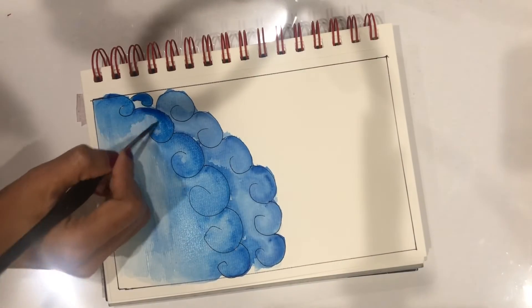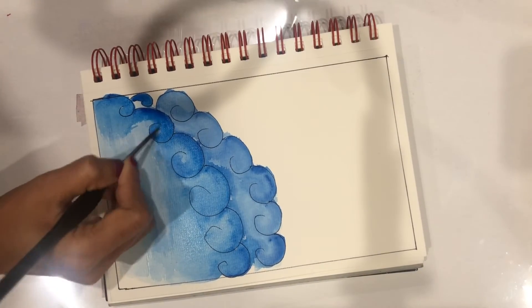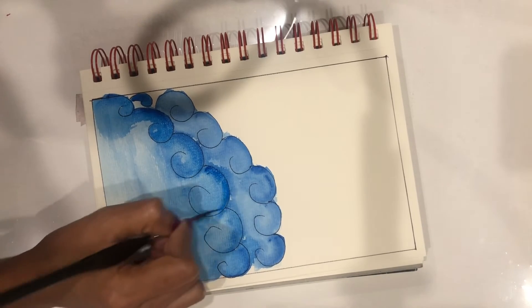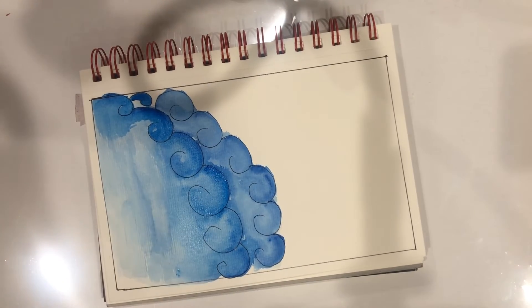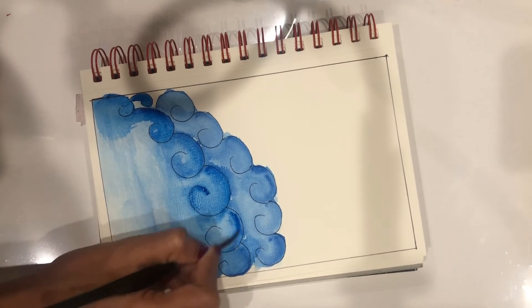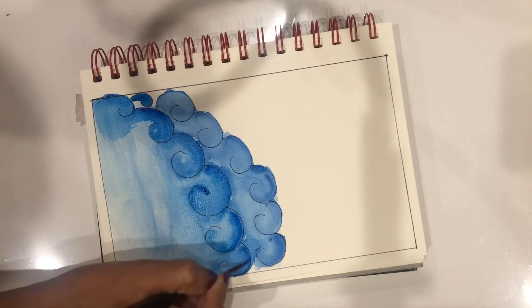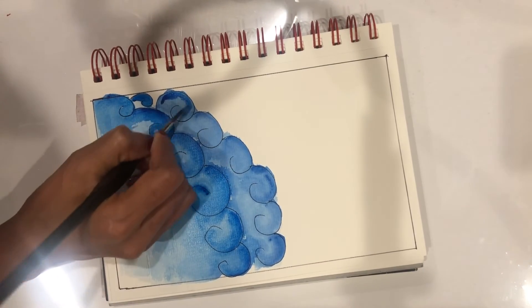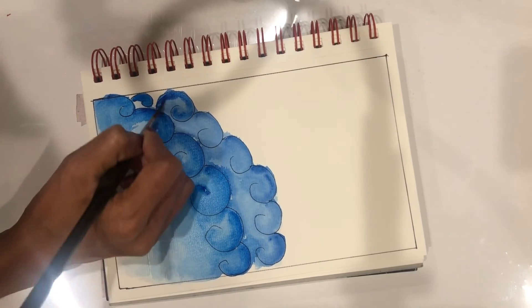Now I almost have what I want for the water. Then I'm just going to go back and add a little more blue to the edges to emphasize the shading, and then it's pretty much done. Yeah, I hope this helped. Let me know if you have any questions.